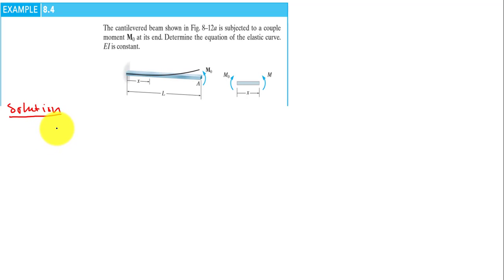The second degree differential equation is d²v/dx² equals M over EI. This gives us EI multiplied by d²v/dx² equals M. From the graph the moment is M equals M naught.